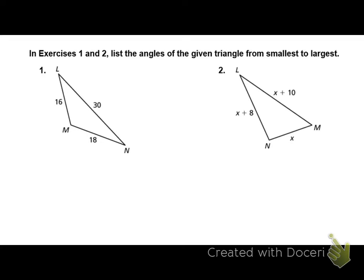In exercises 1 and 2 on the front, we're going to list the angles from smallest to largest. So first, to find the smallest angle, what do we look for? It's across from the shortest side. So which of these numbers is the shortest side?